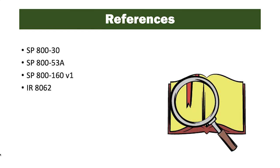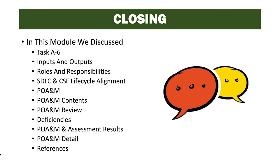References for this task include Special Publications 830, 53A, and 160 Volume 1, as well as IR 8062. In closing, this module discussed the last task in the Assessment step, A6, its inputs and outputs, roles and responsibilities, SDLC and CSF lifecycle alignment, the POAM, POAM contents, POAM review, deficiencies, POAM and assessment results, POAM detail, and references supporting this task.